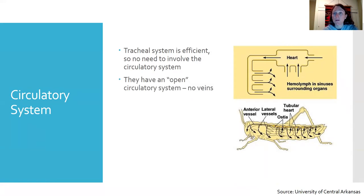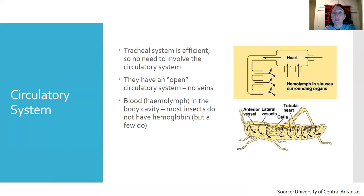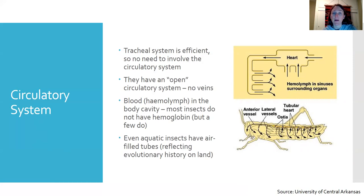Insects have what's called an open circulatory system, so they don't have veins that carry blood around their bodies. Instead, their blood, which is called hemolymph, is just loosely in the body cavity. Most insects do not use hemoglobin to carry oxygen around the circulatory system, but a few do, and we'll talk about that.